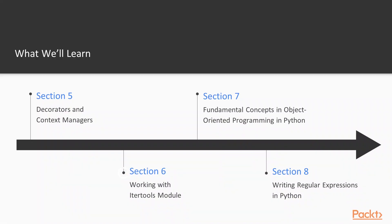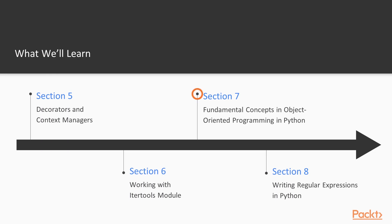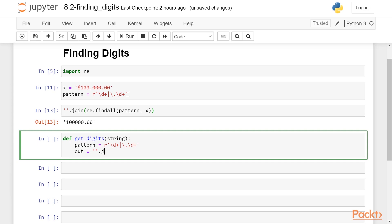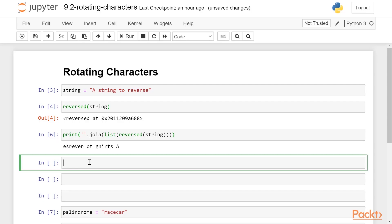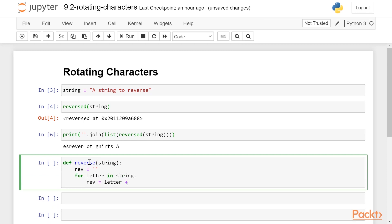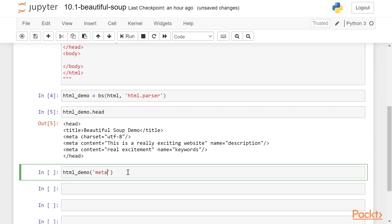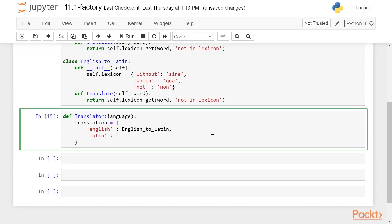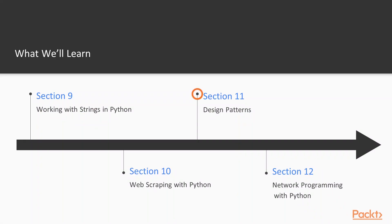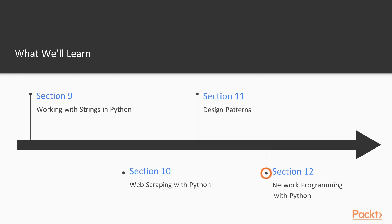We'll then take a look at the Itertools module, and do a study on object-oriented programming where we create classes from scratch and touch on topics such as inheritance. We'll then work with regular expressions using the Python regular expression module. From there, we'll move into String Manipulation, a closely related topic. We'll move into web scraping using BeautifulSoup, take a look at classic design patterns, and finish up with networking concepts in Python.